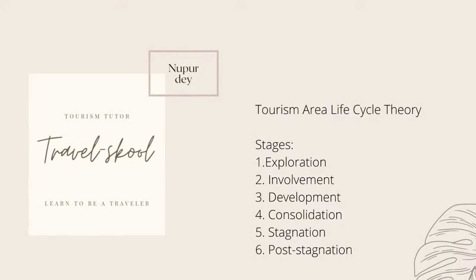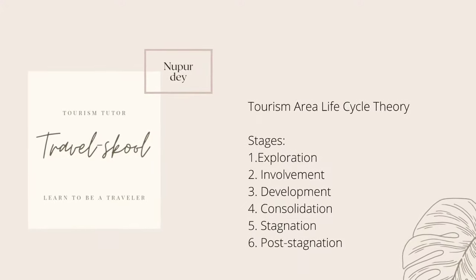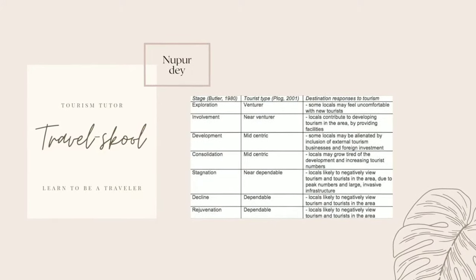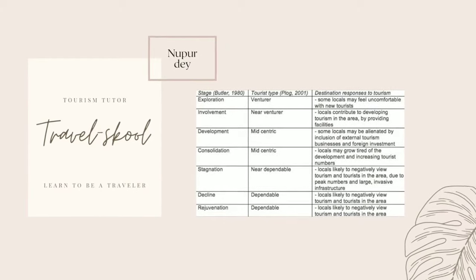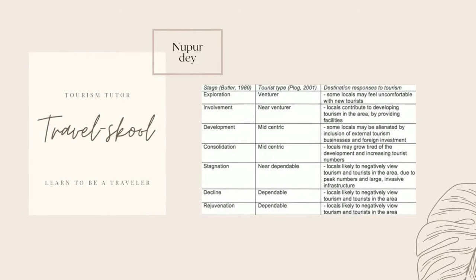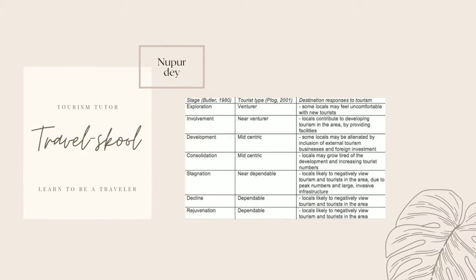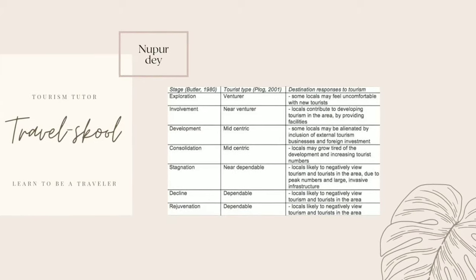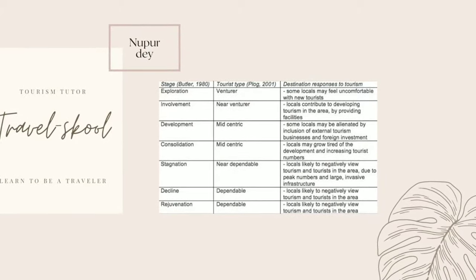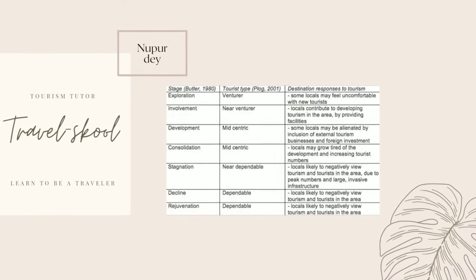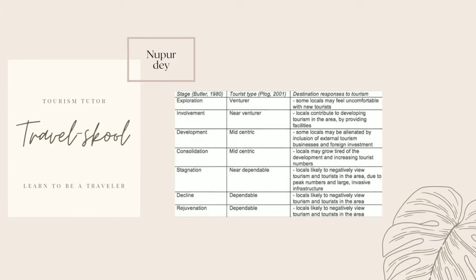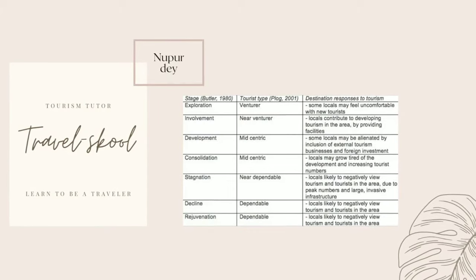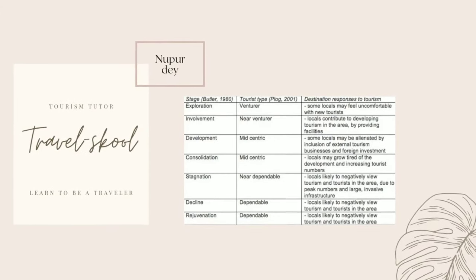To summarize the whole theory, there is a chart given by Butler in 1980 explaining the stage, the tourist type, and the destination's response to tourism. In the first stage — exploration — the tourist type is 'venturer,' meaning the person is in an adventurous mode, and the destination's response is that some locals may feel uncomfortable as they haven't seen tourists before.